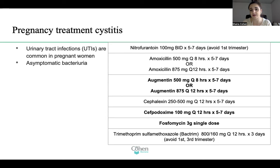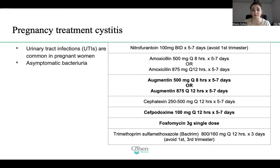Augmentin is also a great beta-lactam choice: 500 mg every eight hours for five to seven days, or 875 mg every 12 hours for five to seven days. Cephalexin is not a bad choice: 250 to 500 mg every 12 hours for five to seven days. Cefpodoxime 100 mg every 12 hours for five to seven days. Fosfomycin three grams as a single dose is good for non-compliant patients. You can give Bactrim, but keep in mind that both Bactrim and nitrofurantoin are frowned upon in the first and third trimester due to concerns about jaundice in the baby — it's not an absolute contraindication, but some literature cautions against it.